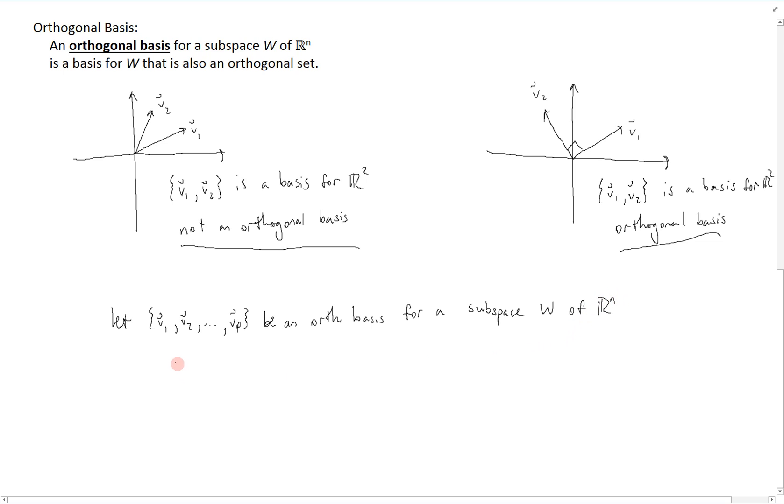Then, for any B in W, we know that B has to be equal to a linear combination of our basis vectors, since it is in that subspace. So it's equal to this.